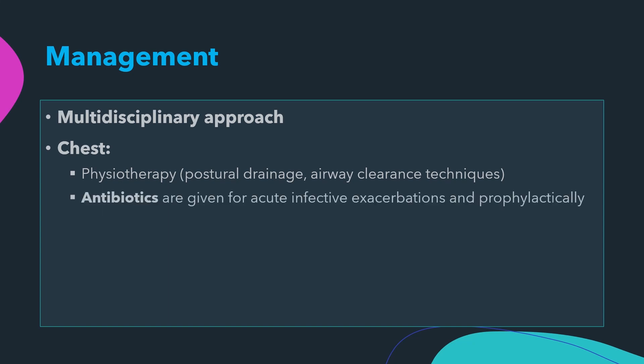Antibiotics are given for acute infective exacerbations and prophylactically. In infancy and childhood, the usual infecting organism is Staphylococcus aureus, treated with penicillin. Later, chronic Pseudomonas infection is an important predictor of survival, and prophylactic antibiotics should be considered. Prophylaxis can be given with thrice-weekly azithromycin, or with nebulized colistin or tobramycin.